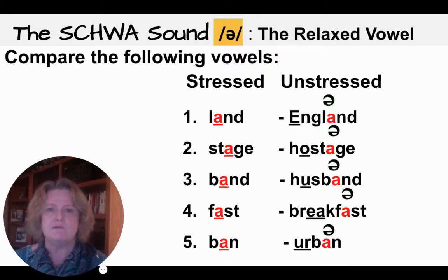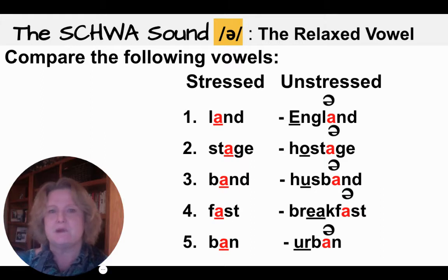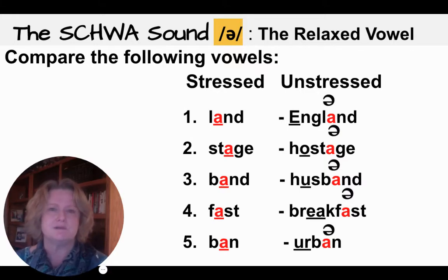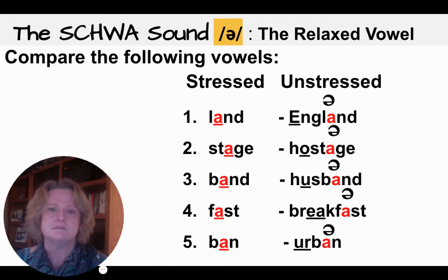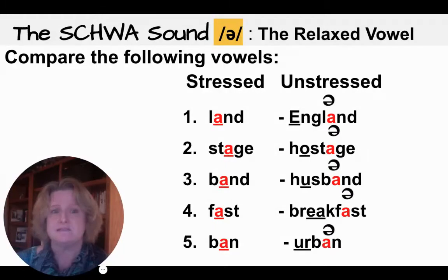That's a quick review. Now let's get to the schwa sound — it's usually marked by an upside-down E. I've made it mustard colored because it's like a very short mustard. In fact, the A in mustard is a schwa. If vowels are underlined, they're stressed; if not, they're unstressed. For example, 'land' is stressed, but in 'England,' the E is stressed.